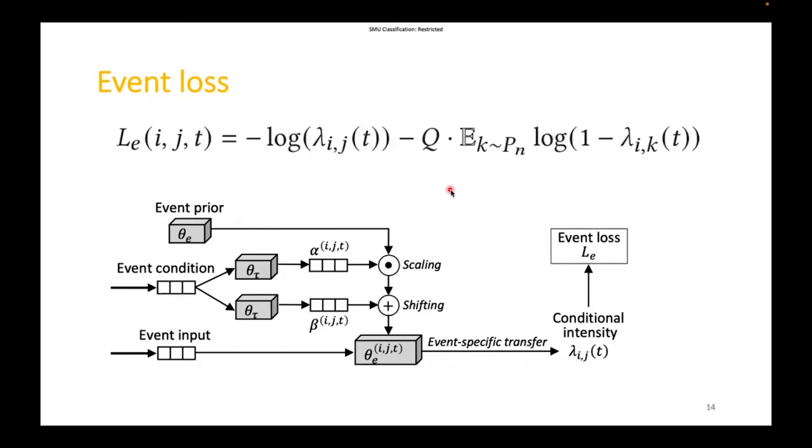Given any event that has occurred, the loss node is defined as follows, where we sample a negative node k according to the distribution pn and q is the number of negative samples for each positive event.